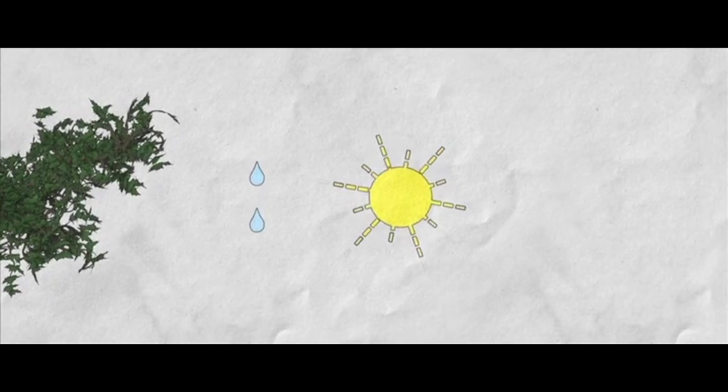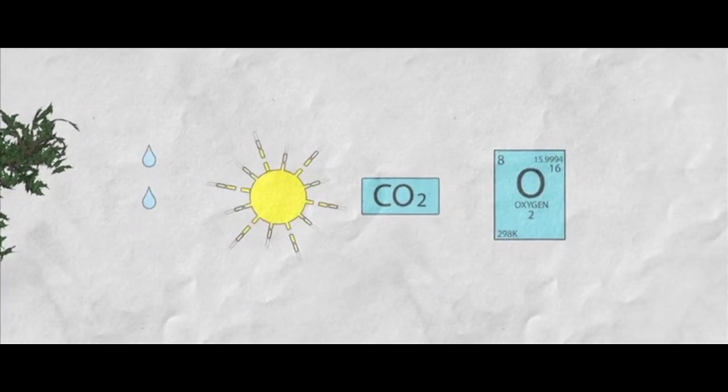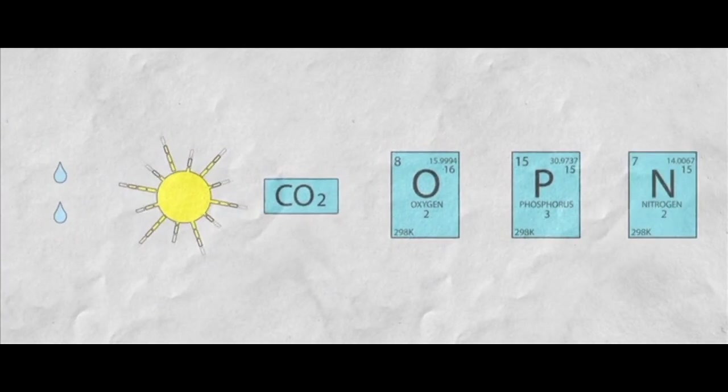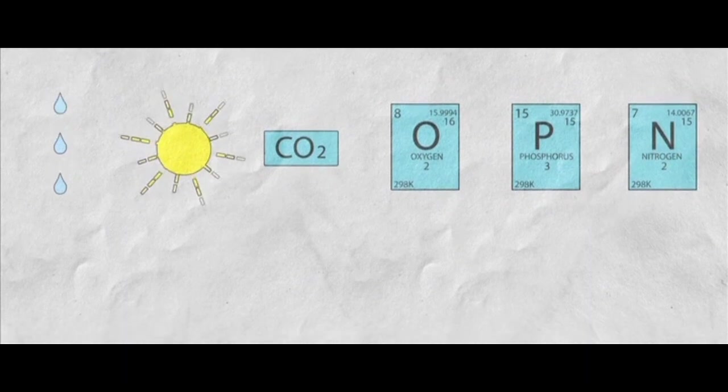Food production. To survive, grow and reproduce, plants need water, sunlight, carbon dioxide, oxygen and nutrients like phosphorus and nitrogen. All of these are found inside the earthship, allowing many edible plant options to grow in your botanical cell.